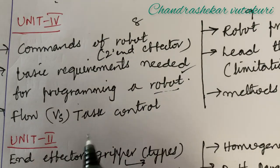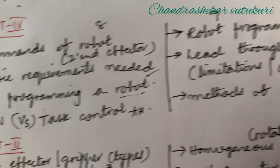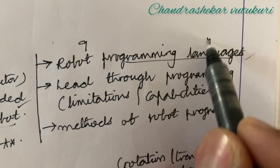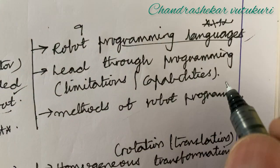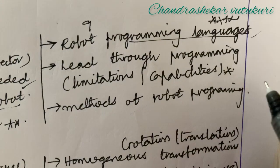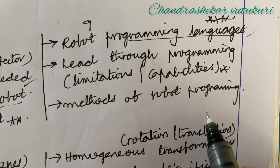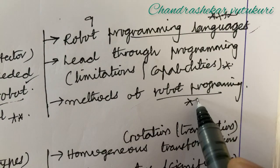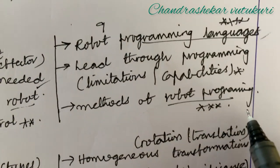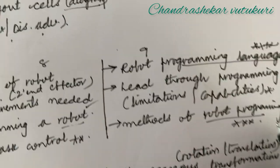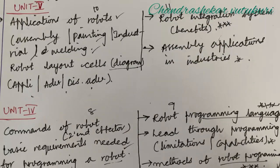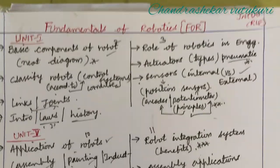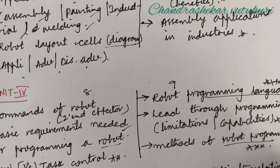We'll see the commands of robots. This is a part of 8th and 9th question in your question paper. Basic requirements needed for programming a robot and the flow versus task control different types, and the robot programming language is set with a damn sure question. You need to work out along with their commands, lead through programming limitations and as well as their capabilities, and method of robot programming.